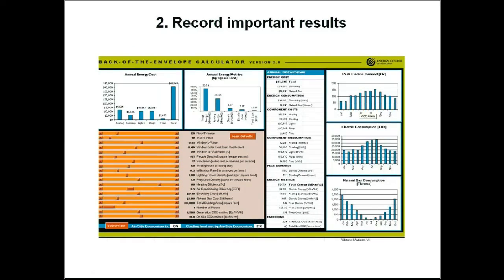Now that we have the baseline building parameters input, we want to record our important results. You may ask, what are the important results? Often it's cost, but that question is really up to you. The important results I've recorded here include the annual energy cost, annual electric consumption, natural gas consumption, peak electric and cooling demand, as well as the total CO2 emissions. It's often helpful at this point to do a quick sanity check to make sure that these values make sense. The annual energy cost comes out to about $1.40 per square foot, and that's well within the acceptable range of annual energy costs for an office. You can also double-check the consumption rates against CBECS published data from the Department of Energy.